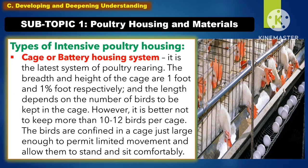Another type of intensive poultry housing is the cage or battery housing system. It is the latest system of poultry rearing. The breadth and height of the cage are 1 foot and 1.5 feet respectively, and the length depends on the number of birds to be kept in the cage. However, it is better not to keep more than 10 to 12 birds per cage. The birds are confined in the cage just large enough to permit limited movement and allow them to stand and sit comfortably.